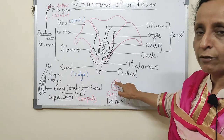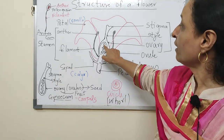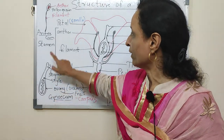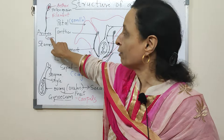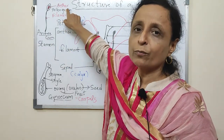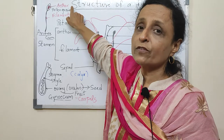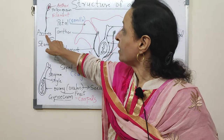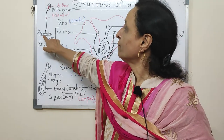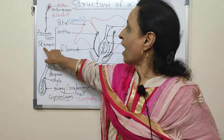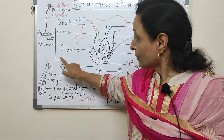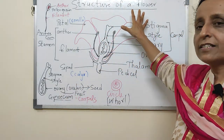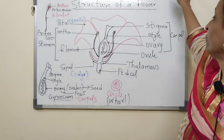Here is gynoecium — the structure of gynoecium: stigma, style, ovary. And here is the androecium which consists of pollen grains. Pollen grains consist of the male reproductive cells. Androecium means male reproductive structure and it is also known as stamen.